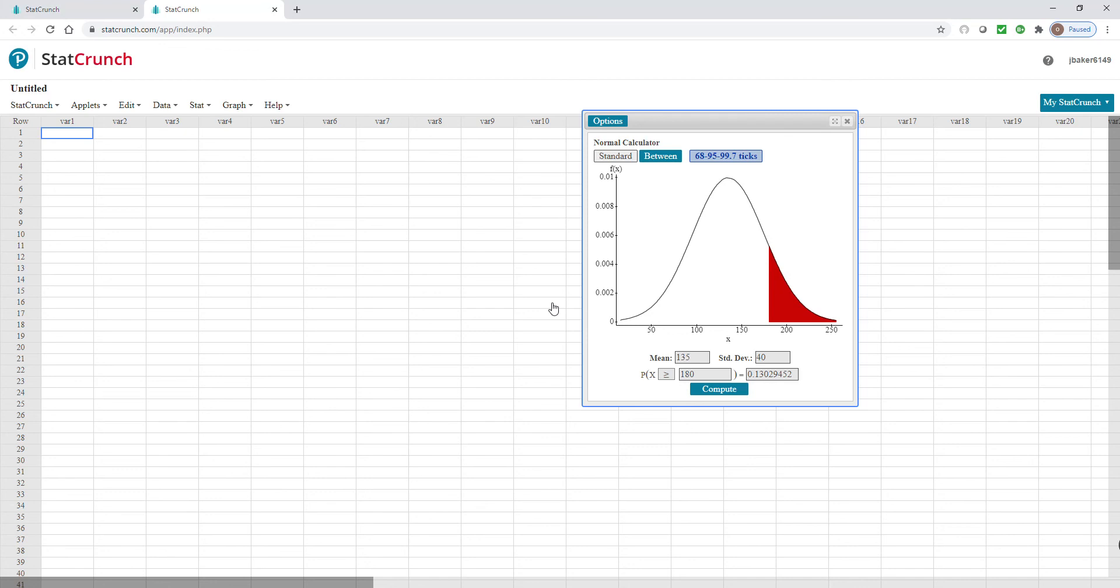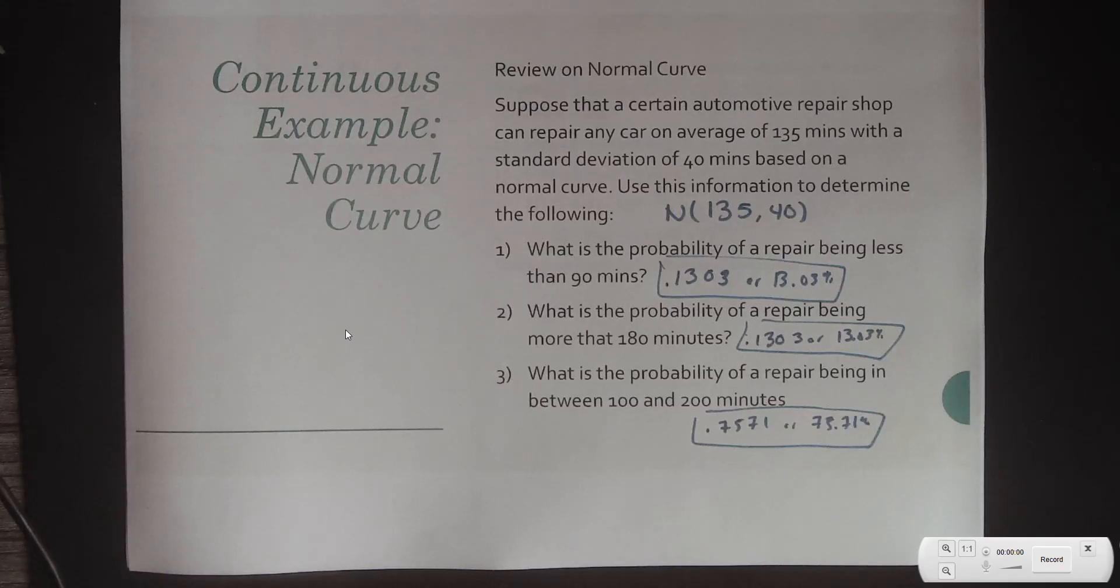Then, what is the probability of repair being between 100 and 200 minutes? So I got to change this to 100. I hit Between, by the way, change this over. And then put, this is 200, and it'll give me 0.7571 or 75.71%. And I'm going to flip back to my view in one second.